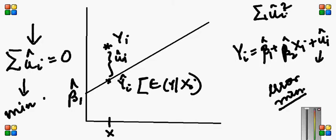So one reason why I will minimize summation u_i hat square is that summation u_i hat is always zero. The other reason why I will minimize summation u_i hat square and not summation u_i hat is because of the following.